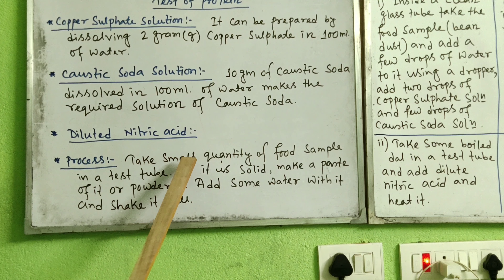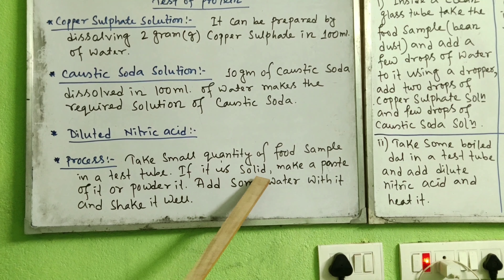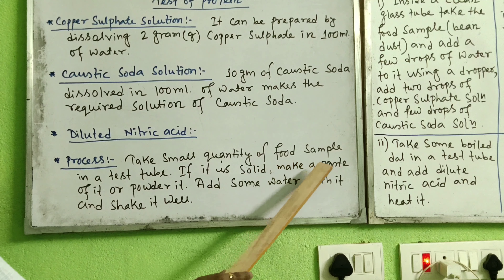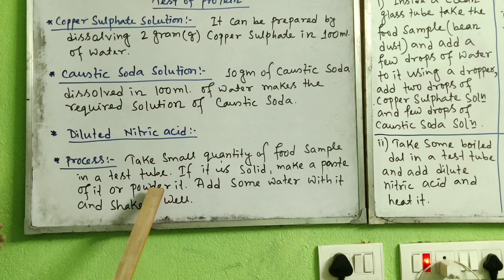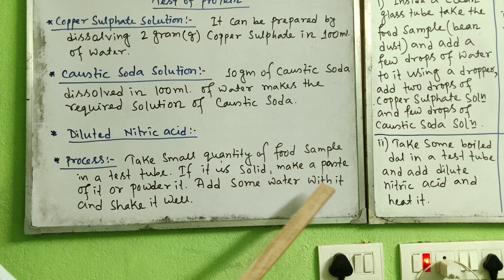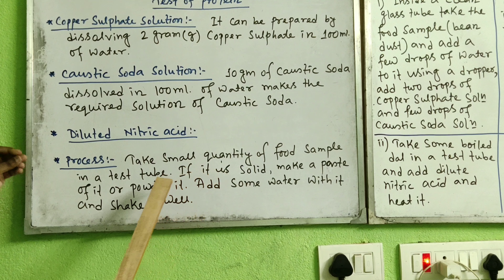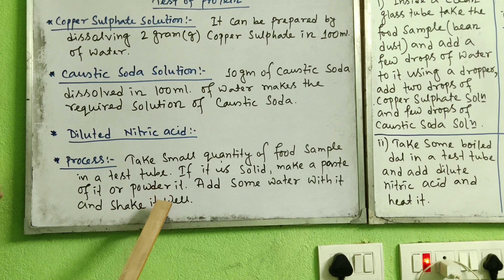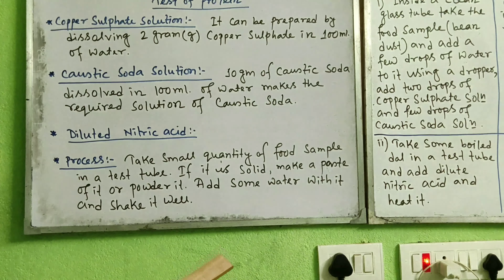The process is like this: take a small quantity of food sample in a test tube. If the food sample is solid, make a paste or powder of it by smashing it. Then add some water with it and shake it well in the test tube. Take the powdered or paste food sample in a test tube, add water, and shake it well. Then come to the next main step.